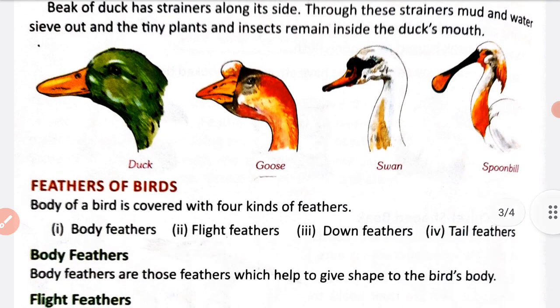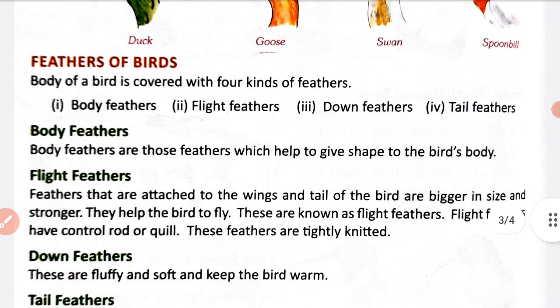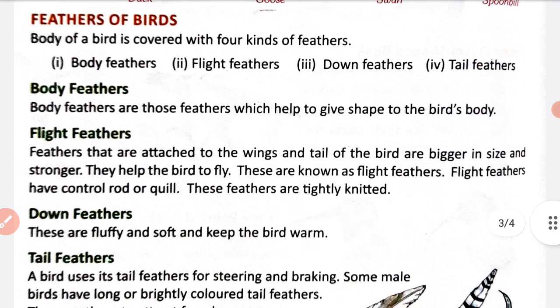Now our next topic is feathers of birds. The body of a bird is covered with four kinds of feathers. Birds ki body ko feathers cover karte hain, aur yeh four type ke hote hain. The four types are: first, body feathers; second, flight feathers; third, down feathers; and fourth, tail feathers.